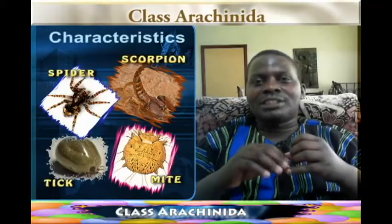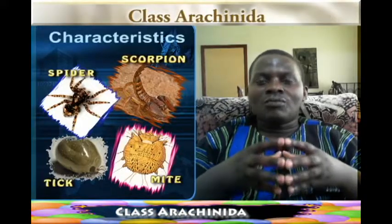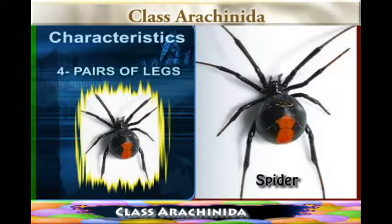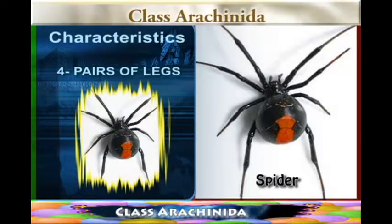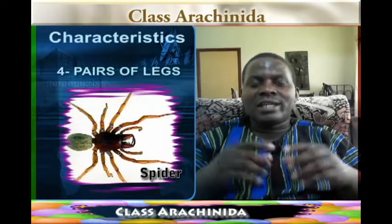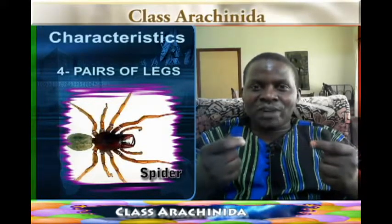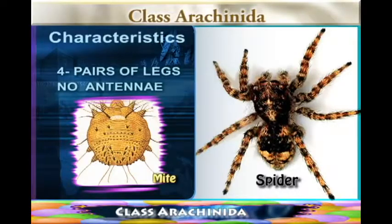One of the characteristics is their legs. They have four pairs of legs — that is eight legs. You will find that the spider, the scorpion, the mite, and the tick have no antennae. They lack antennae.